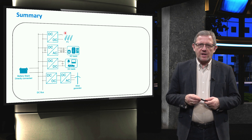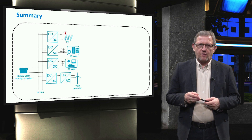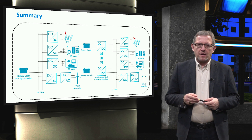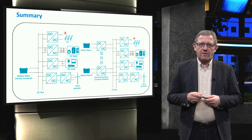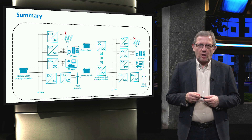Today, we mainly addressed the single bus layout of a DC microgrid. Two layouts were introduced and their main advantages and disadvantages were discussed. The first layout was based on a single bus with direct connection of battery, which provides inherent stability but is not expandable. The second layout was a single bus with indirect connection of battery stacks, which is expandable but has lower stability. Next, we address the hybrid layout of a DC microgrid.